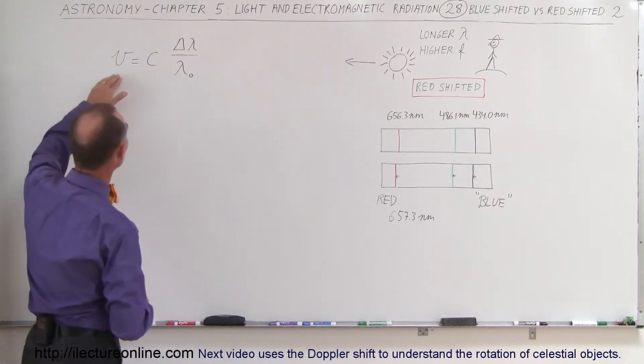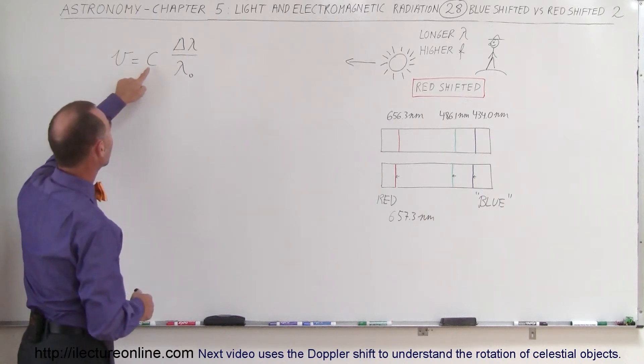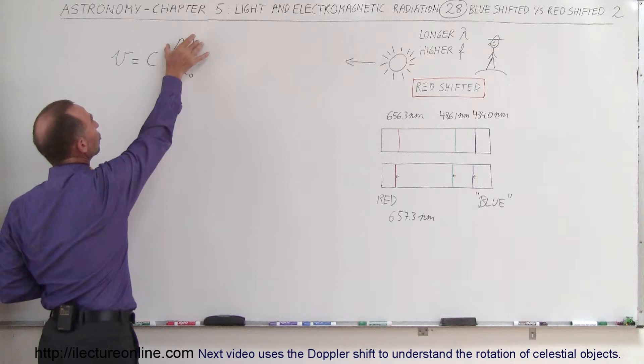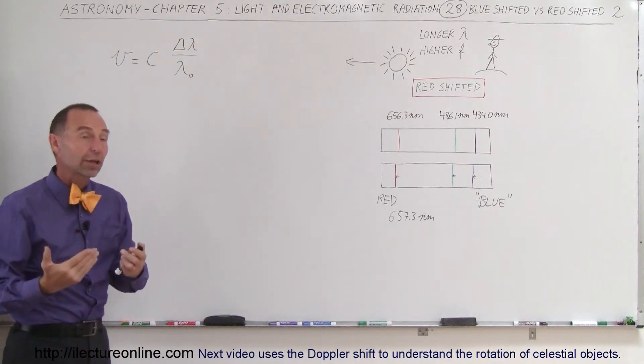Here's the equation that we use: the velocity is equal to the speed of light times the ratio of the change in the wavelength divided by the original wavelength. Let me work it out for you so you can see how we actually use those numbers.